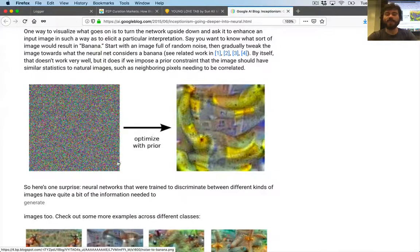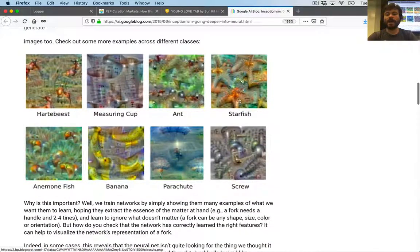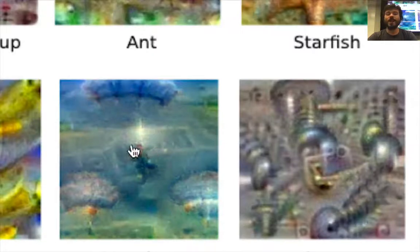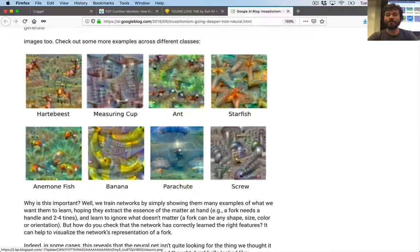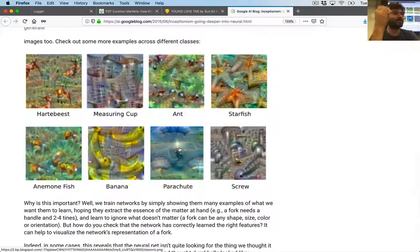They reviewed the idea of taking an image and optimizing it so that it would activate a particular neuron — like this one was looking for bananas. You take random noise and adjust the pixels until it activates the banana neuron sufficiently. They showed this with different things: heart of beast, measuring cup, starfish, parachutes. Notice with the parachute you see a parachute, and it also looks like there's somebody — a little person — hanging off it. That's because the neural network sees parachutes associated with people in the training data.